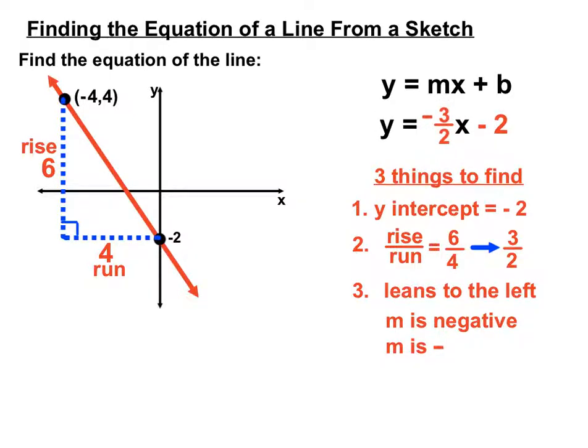So we gathered three bits of information. We gathered our y-intercept from here. We gathered our rise over run and we used a right angle triangle that we created to help us. We saw that our rise was 6 and our run was 4. We pieced that together and simplified it into 3 over 2. And our final bit of information is that a line leaning to the left has a negative gradient. So that minus sign came into our compiling of our y equals mx plus b linear equation.